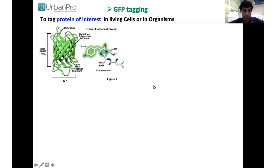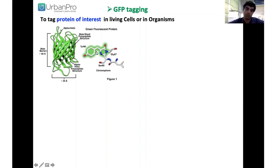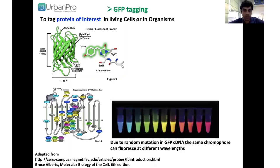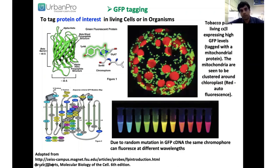The other approach is GFP tagging. GFP is the green fluorescent protein, as the name suggests, and it is used to tag proteins of interest in living cells and foreign organelles. The structure is a seven-beta-barrel with one alpha-helix passing through the center. You can generate multiple mutations in the coding region of GFP to get various fluorescent molecules like YFP and CFP. This image shows a tobacco plant expressing high levels of GFP, in which a mitochondrial protein is tagged with GFP.